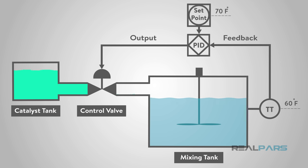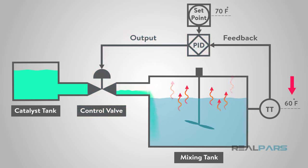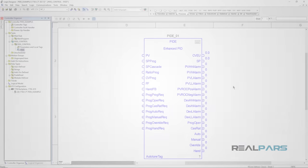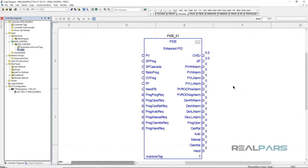Now let's suppose we have a mixing tank where the temperature is to be maintained at a certain setpoint. The control valve allows a catalyst to be added to the tank to increase the temperature, and the temperature transmitter will send the feedback to the PID. This will represent our process and control loop for programming purposes. To be able to configure this block, I need to open up the properties by simply double-clicking on the block.